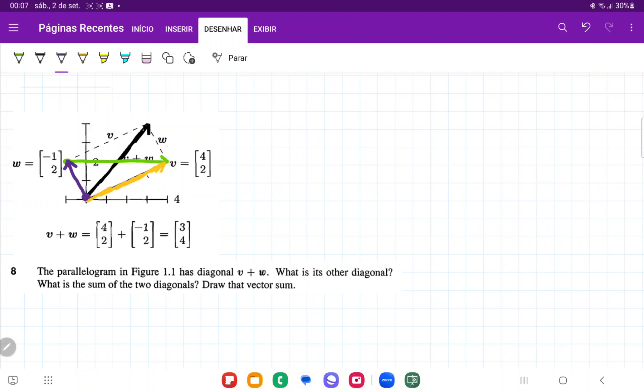So what we have here is that W plus the diagonal is equal to vector V. And so if we think about isolating the diagonal, we have that the diagonal is just going to be equal to V minus W. So we have found the first diagonal. So let me write that. The diagonal is V minus W.